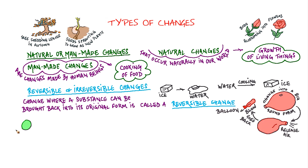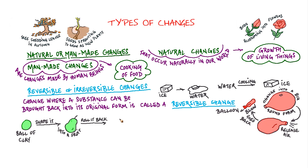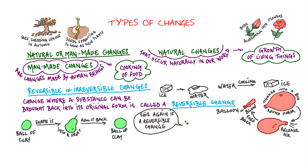Take a ball of clay in your favorite color. Mold it into a fruit or any shape that you want. Now roll the clay back into a round ball. This again is a reversible change.